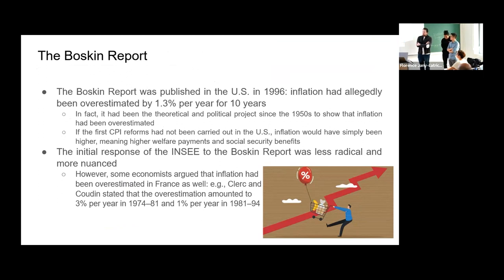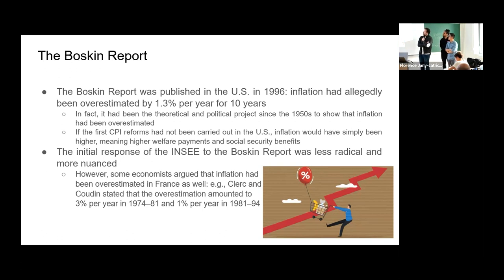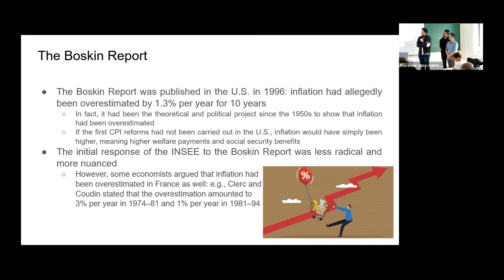One researcher — I think named John Williamson — showed that if we apply the kind of estimate that was first used, inflation would be much higher. The initial response of INSEE was less radical and more nuanced, somewhat undermining the arguments. But some economists, like Clerken-Cudon, argued that in France the overestimation of inflation amounted to 3% per year in 1974–81 and 1% per year in 1981–94 — even higher than what the Boskin report claimed.